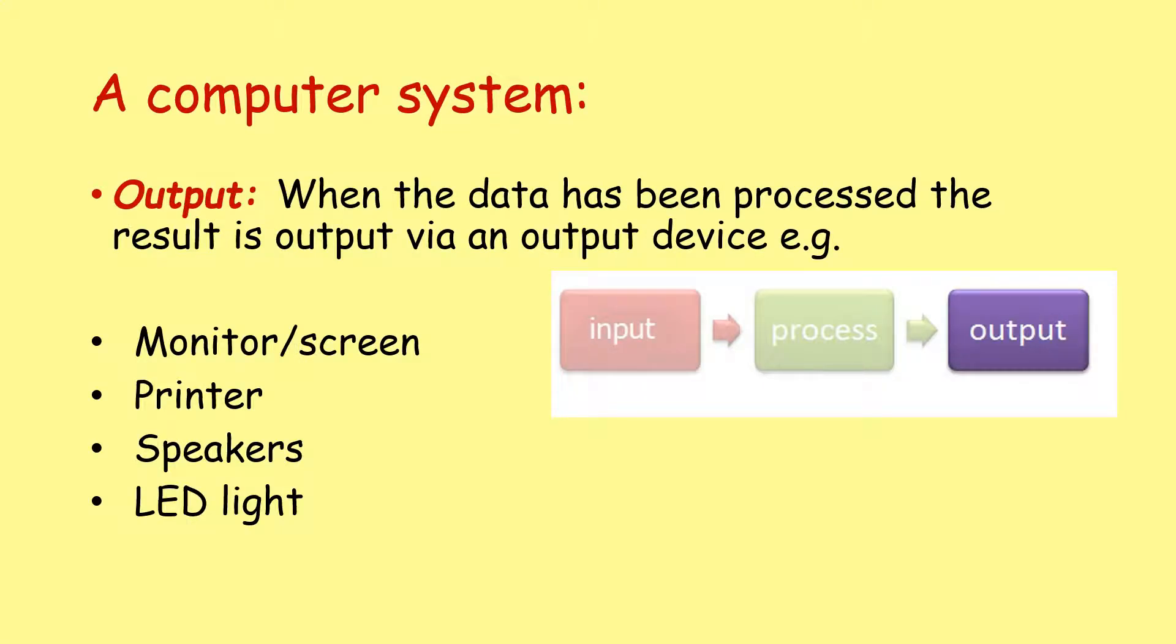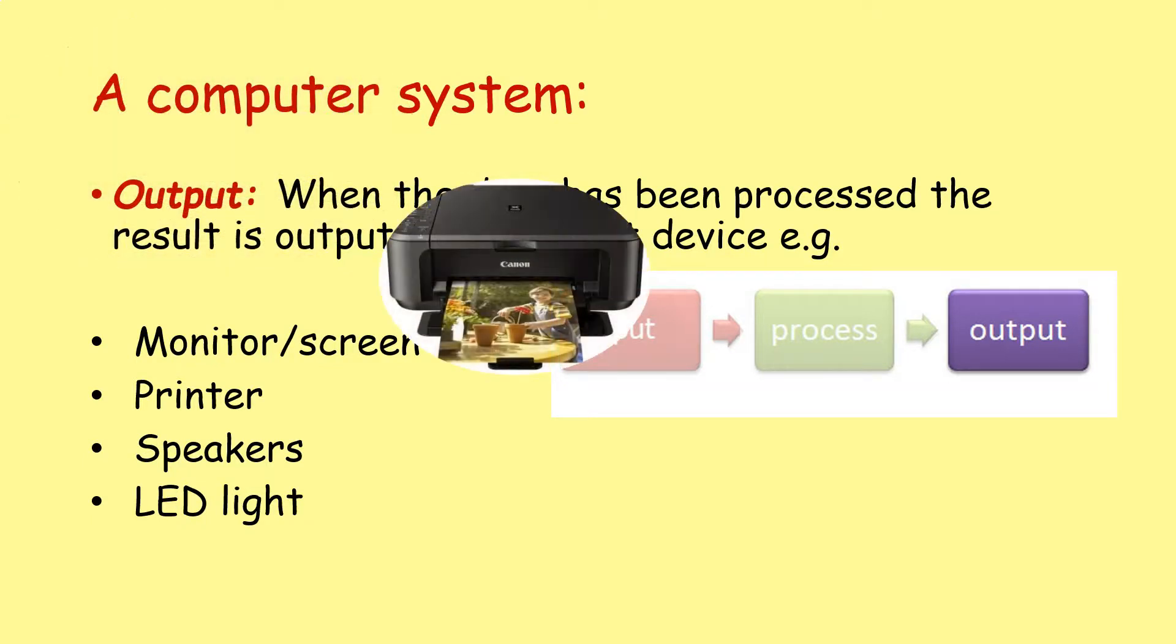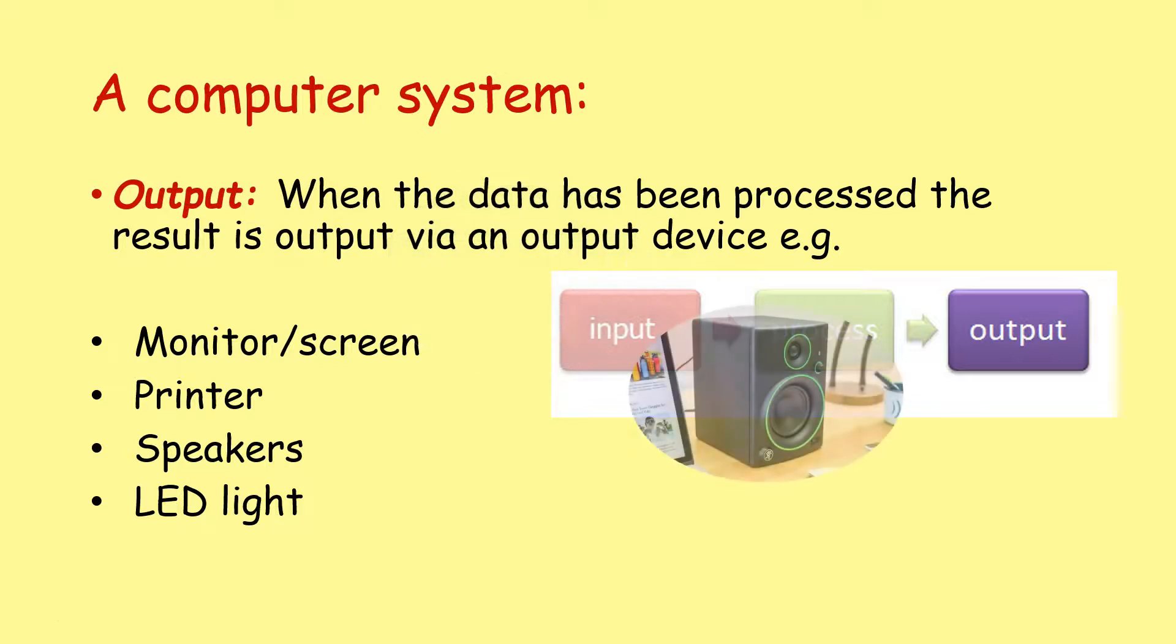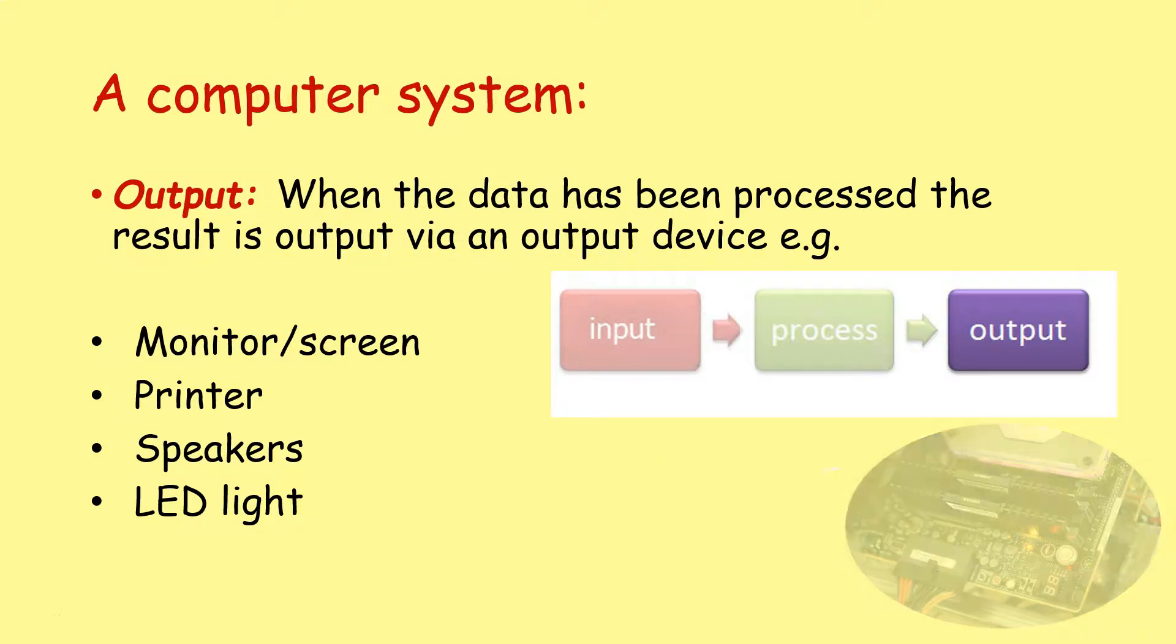And then we've got output. Once the data has been processed, the result needs to be output in some way so the user can see the results. So that can be on your screen, it can be printed, it could be sound that's coming through your speakers, it could be blinking LED lights, just some way of getting that information back to the user.